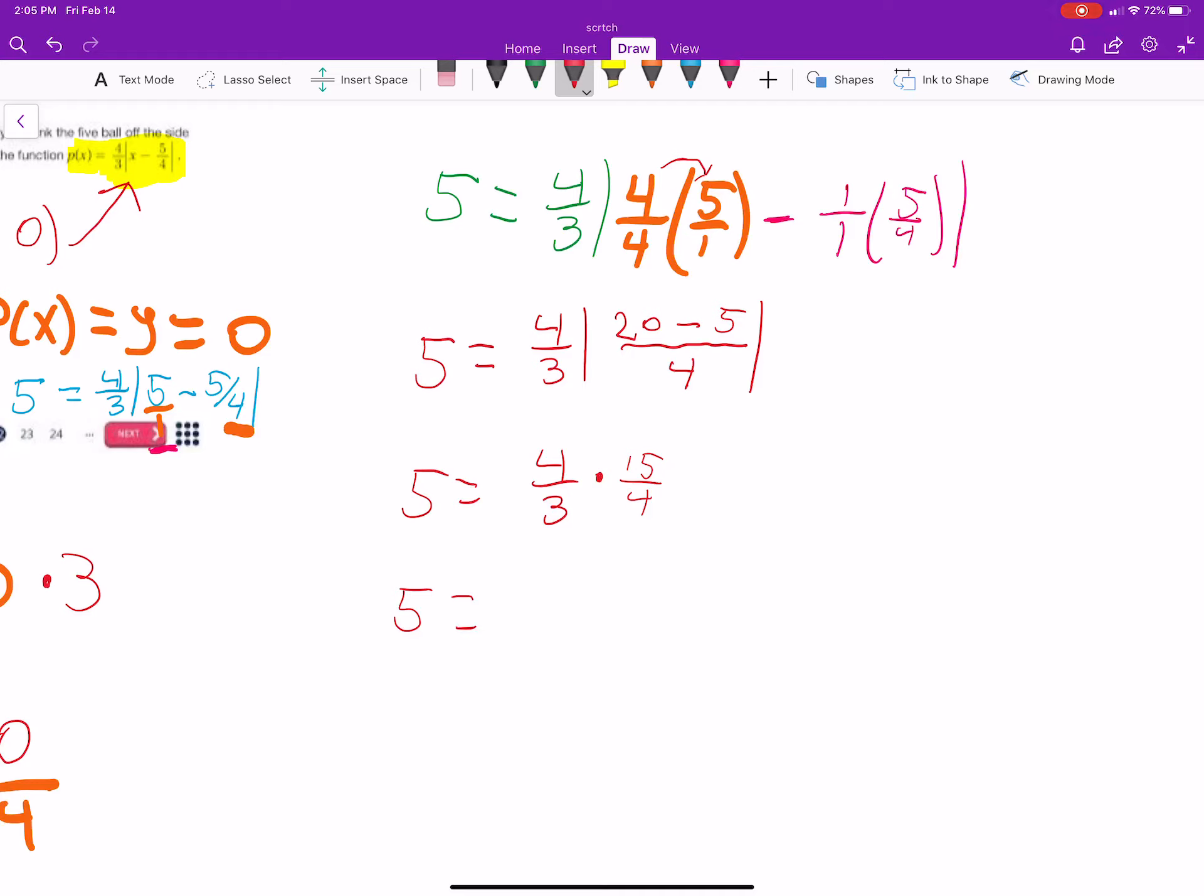5 equals, let's see, what is that? 60 over 12. And then, 60 over 12 is 5. So, 5 equals 5. So, we got a true statement. So, yes, the ball does sink in.